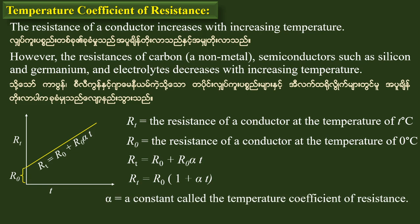Rt is equal to a constant called the temperature coefficient of resistance. R0 is equal to R0, and the unit of alpha is equal to per degree Celsius.